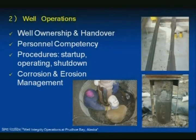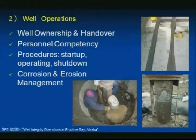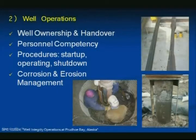Well operations: it's important that during all phases of a well's life, it's clear who has ownership of that well. When it's handed over from drilling to operations to the well interventions team and back, how is it handed over and how is the well status communicated? Are the people operating that well competent — have they been trained and do they understand the issues that go along with operating wells? You also need procedures for startup and shutdown, and some sort of erosion-corrosion management program. That picture on the upper right is a collapsed gas lift mandrel from an offshore location — the A annulus pressure was not monitored during startup and the pressure increase flattened the mandrel. The two pictures on the bottom demonstrate external surface casing corrosion, which in Alaska we fix by excavating, exposing the bad casing section, and welding patches on.